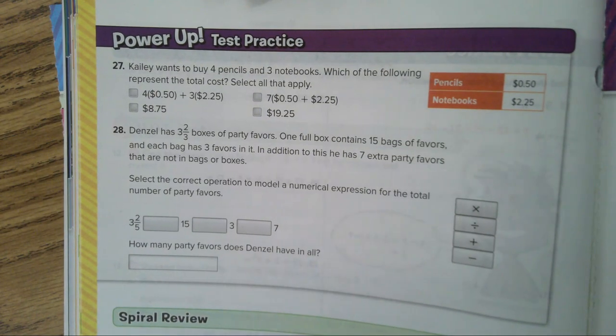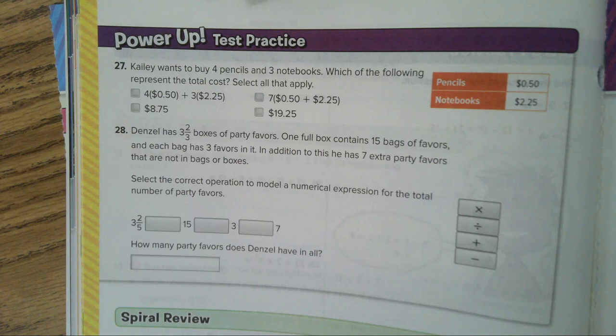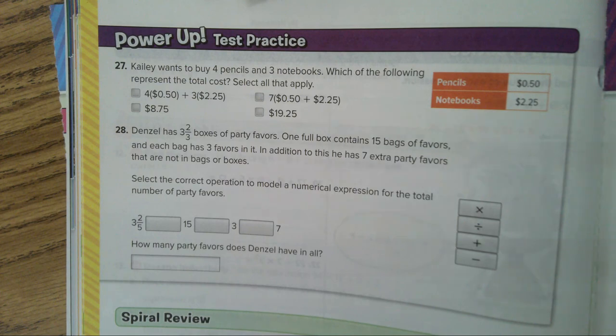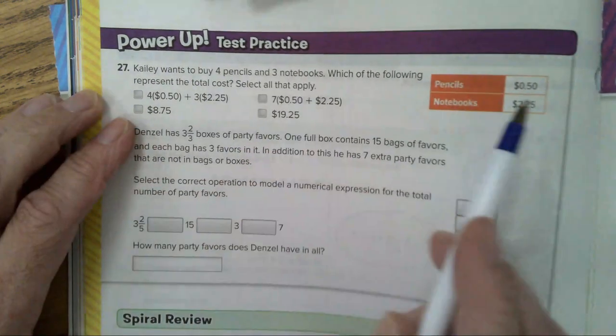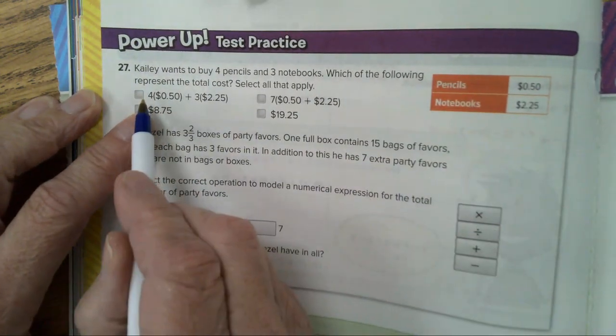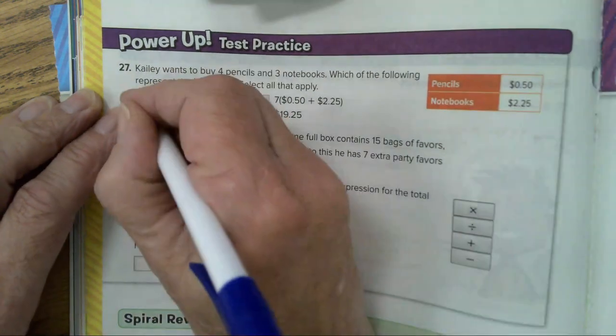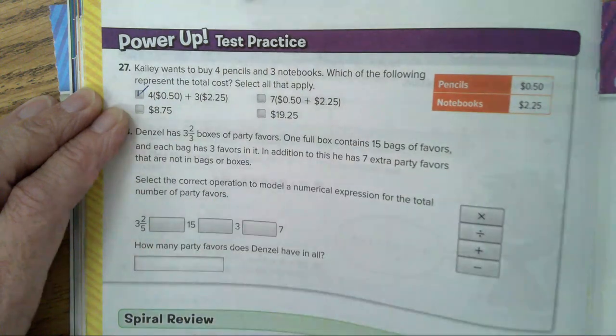Number 27, Kaylee wants to buy four pencils and three notebooks. Which of the following represents the total cost? Select all that apply. So on this page here, four pencils, so 4 times 50, three notebooks, 3 times 225. Well the first one definitely covers that.